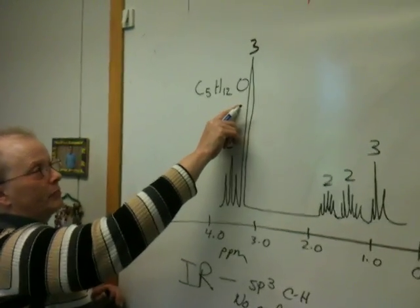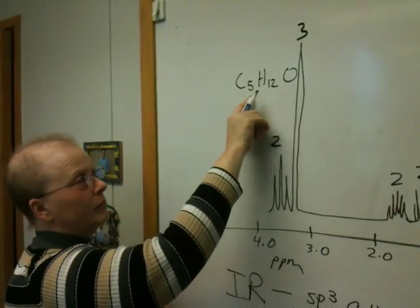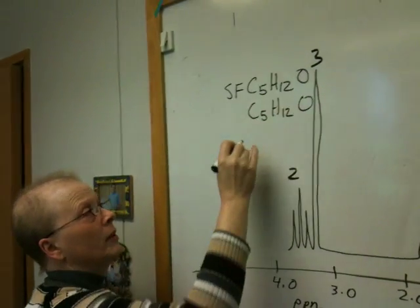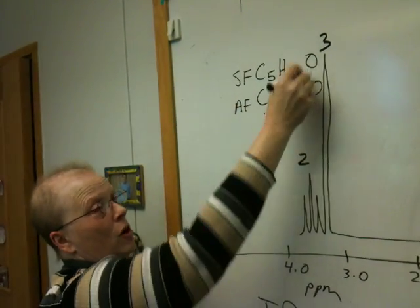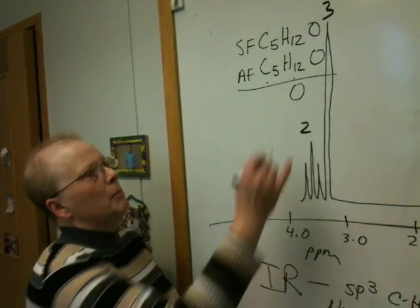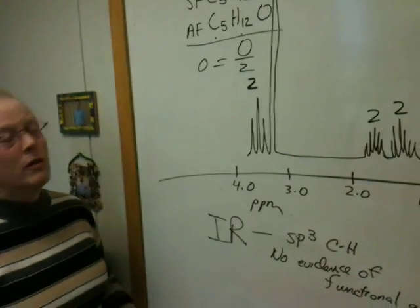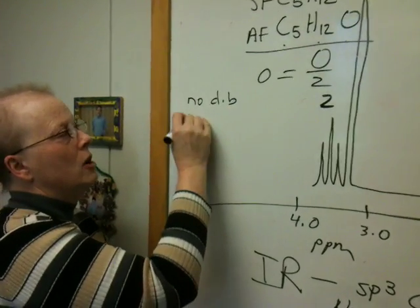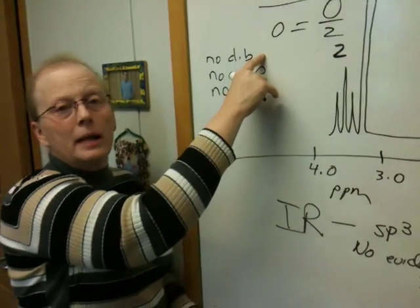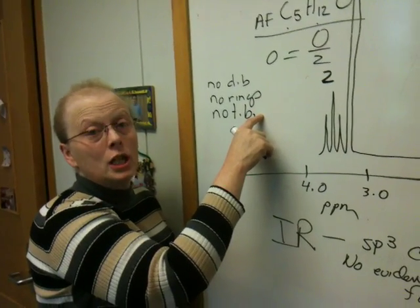The formula is given up here. You will recall that we calculate an unsaturation number by comparing this formula to the saturated formula. The saturated formula is C5H12. The actual formula is C5H12O. You'll recall oxygen does nothing to the formula. The difference is zero, and zero divided by two is zero. What this means is that the molecule is missing no pairs of hydrogen, which means it has no double bonds, no rings, no triple bonds. Remember, a double bond is worth one pair, a ring is worth one pair of hydrogens, a loss of one pair of hydrogens, and a triple bond is a loss of two pairs of hydrogen.